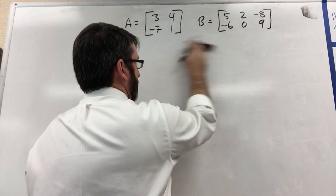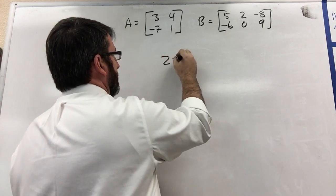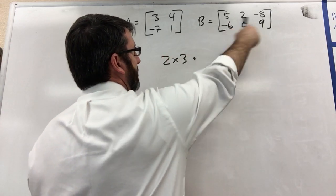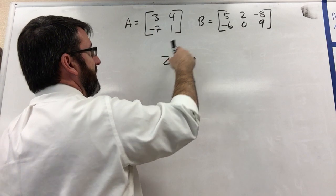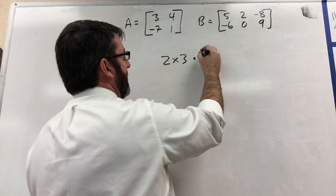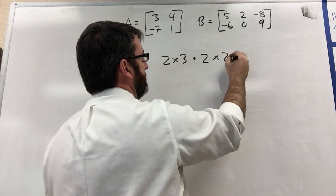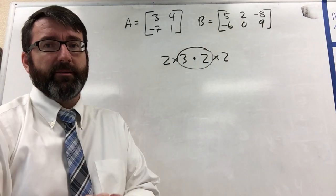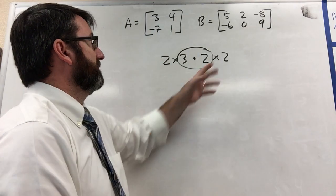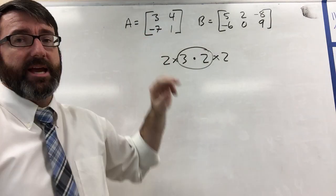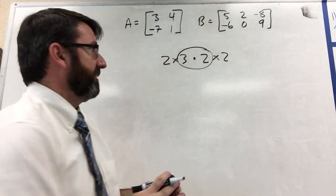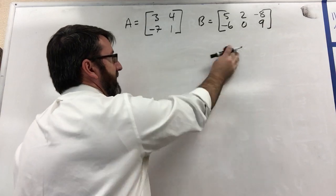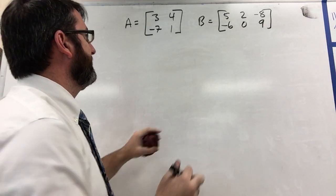However, if we flip this around, 2 by 3, and we multiply B times A, B is a 2 by 3 matrix times A, which is a 2 by 2. These two numbers in the center don't match, and so we're not going to be able to multiply B times A. So that's going to be undefined. But let's go ahead and multiply A times B.